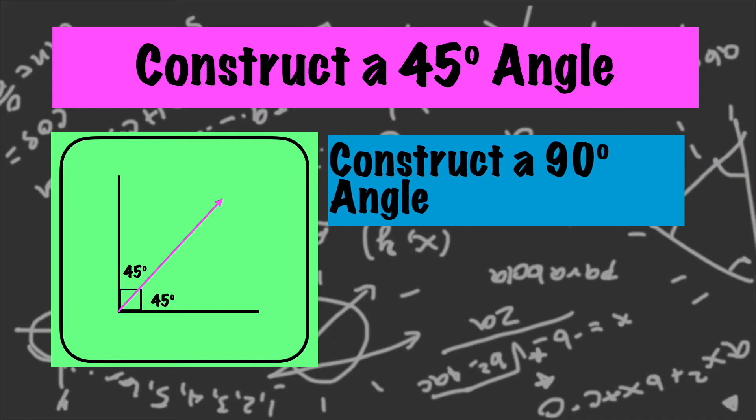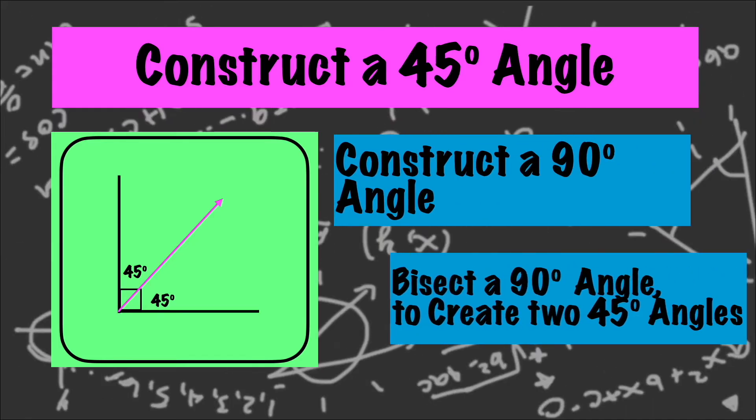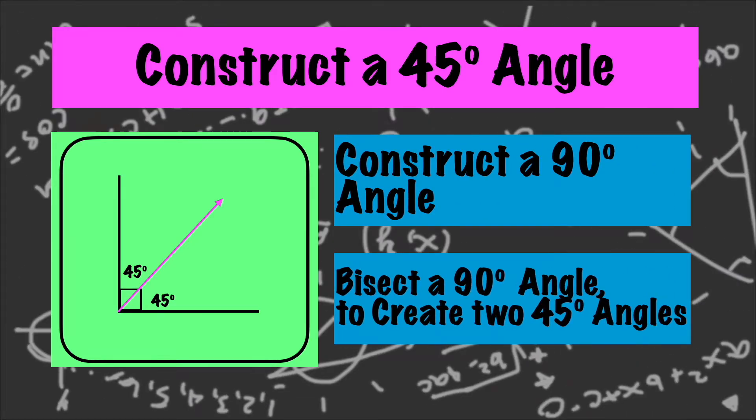First by constructing a 90 degree angle and then we're going to bisect that angle to create two 45 degree angles. So let's begin.